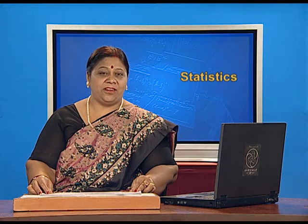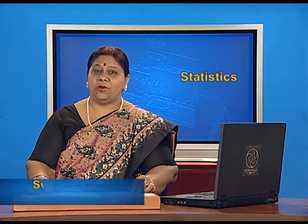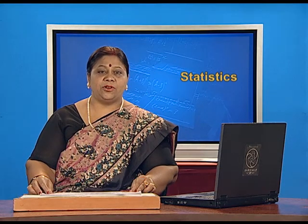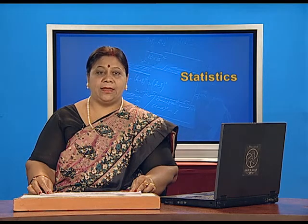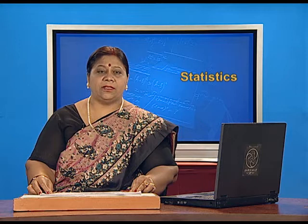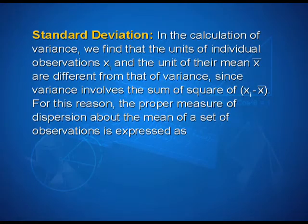Hello students. In the previous session, we introduced ourselves to the variance. In this session, we shall learn about standard deviation. In the calculation of variance, we find that the units of individual observations xi and the unit of their mean x bar are different from that of the variance, since variance involves the sum of the squares of xi minus x bar. For this reason, the proper measure of dispersion about the mean of a set of observations is expressed as the positive square root of the variance and is called standard deviation.